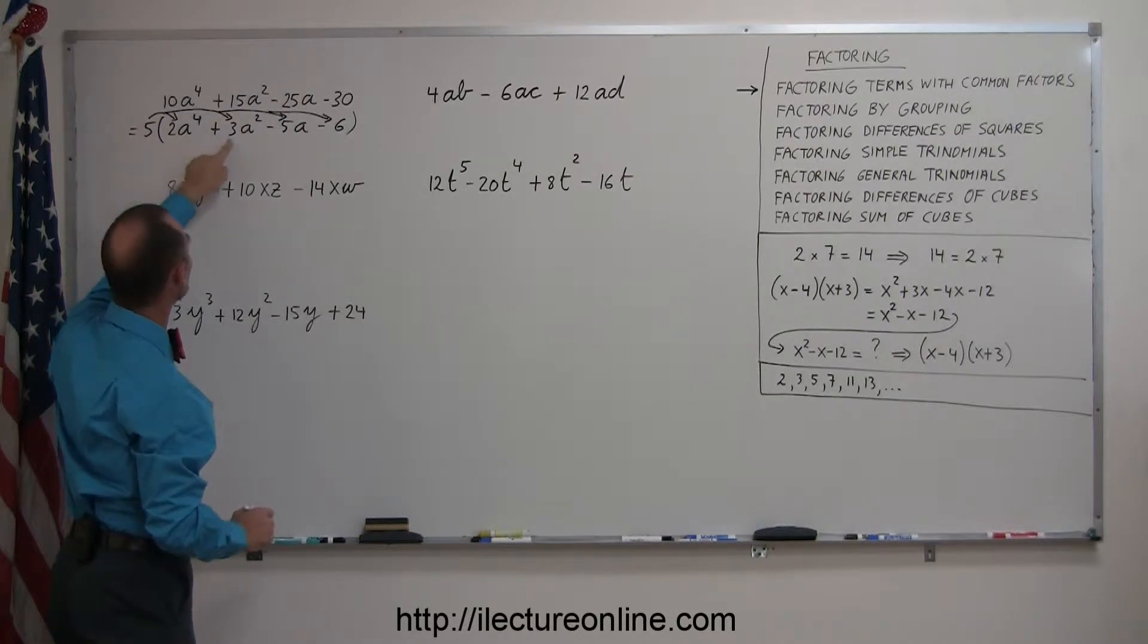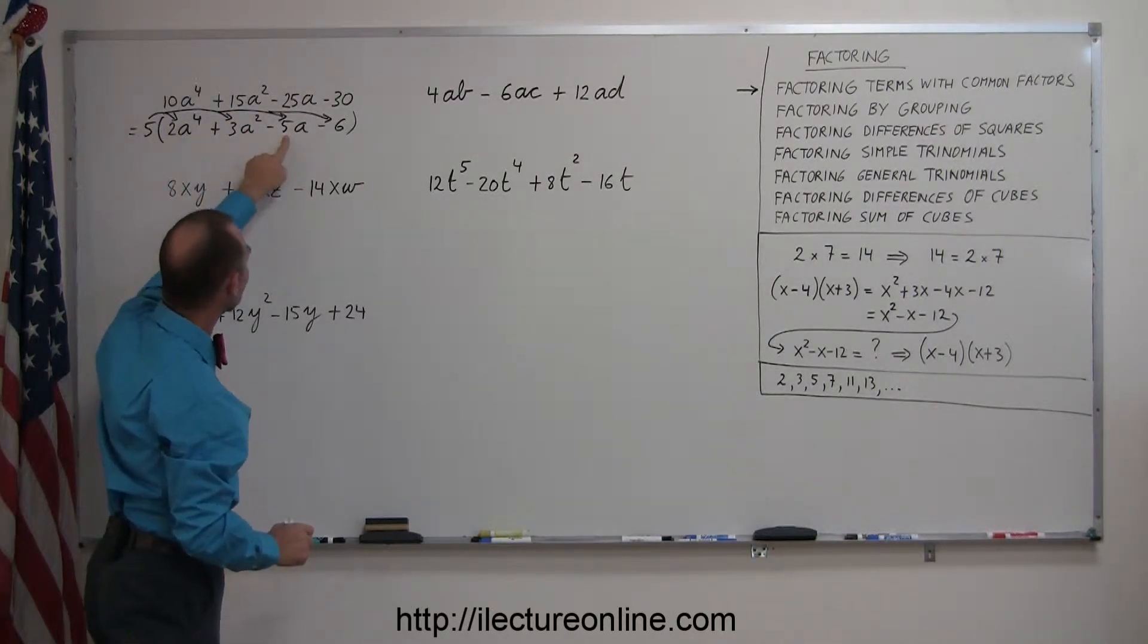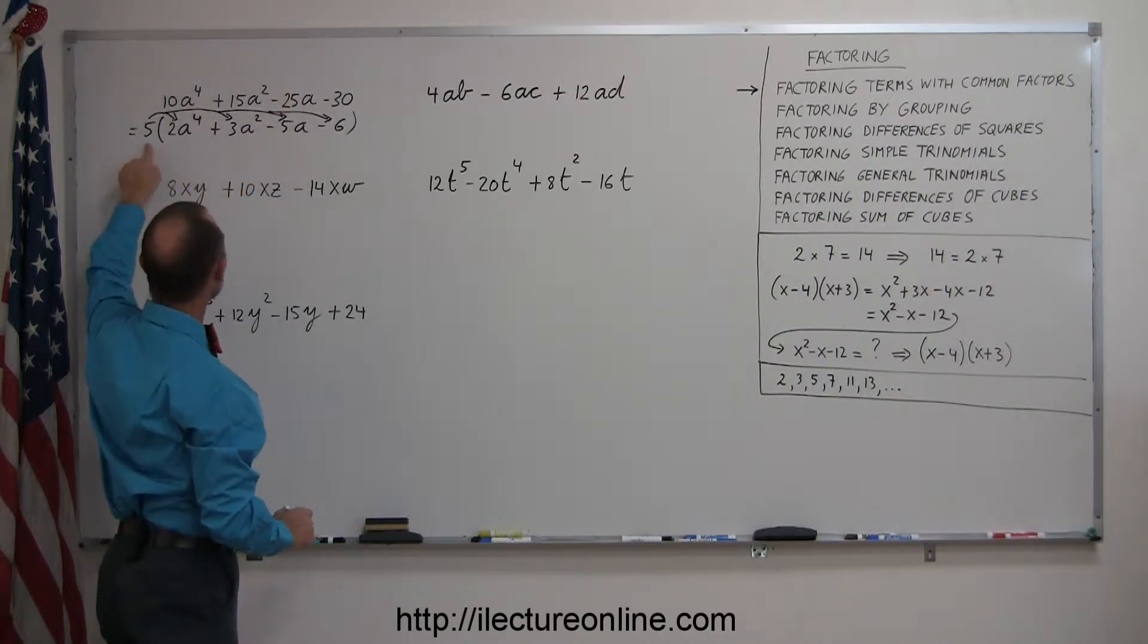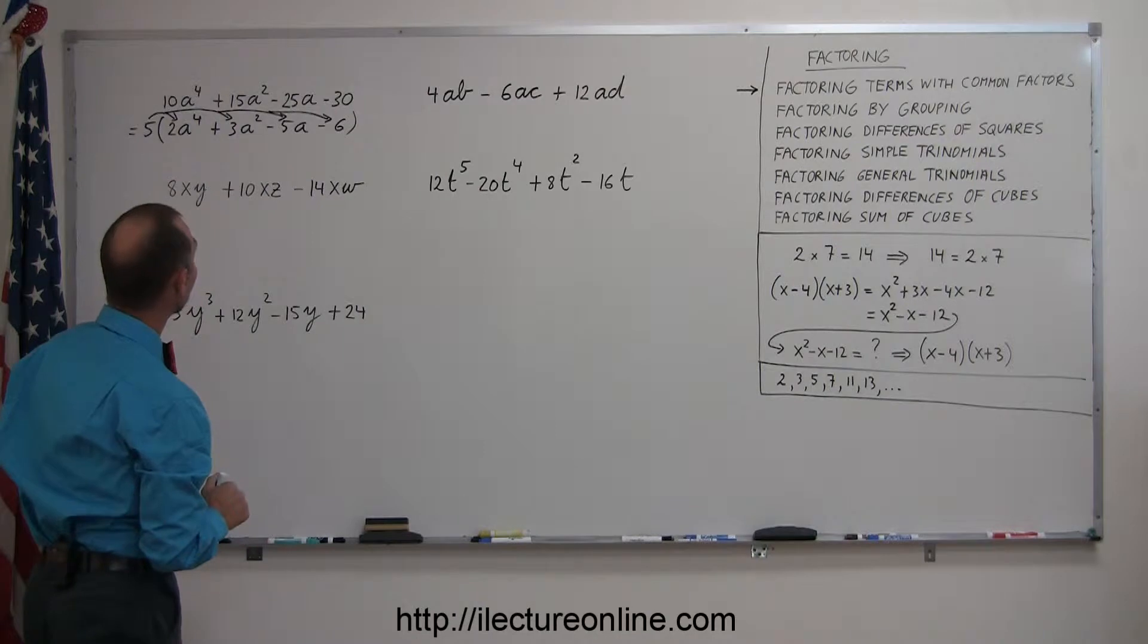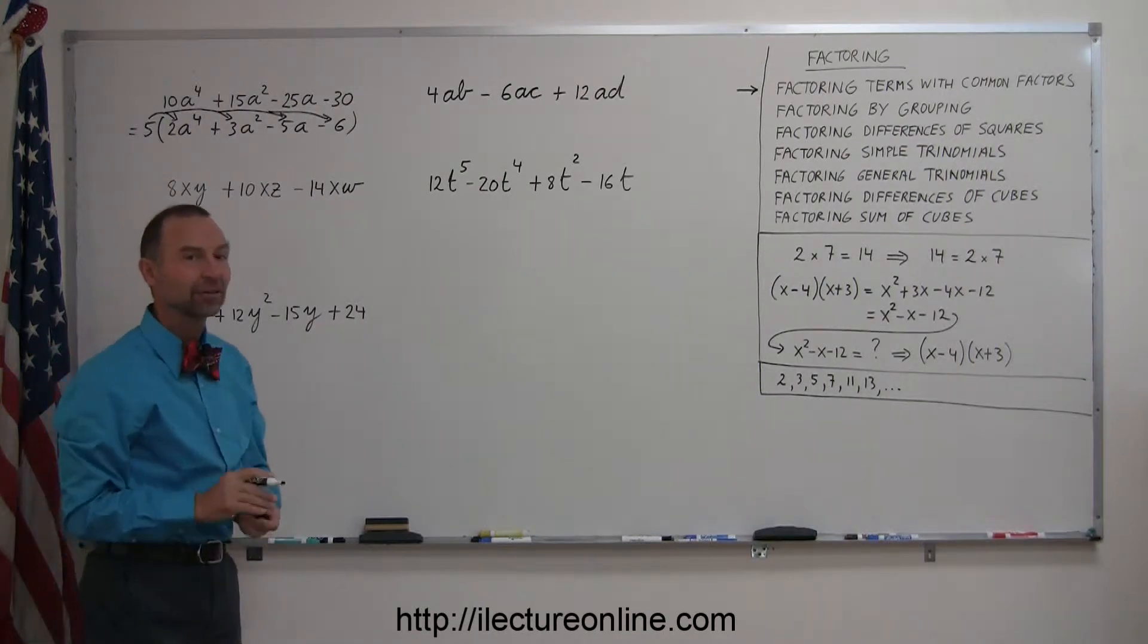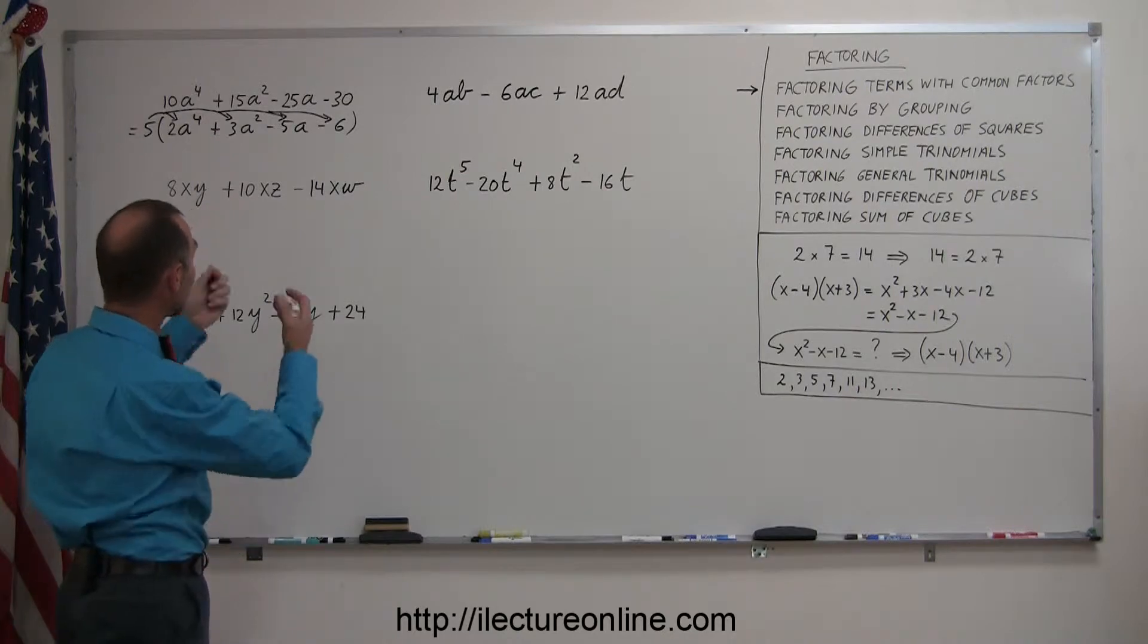If I write 5 times 3a squared, I get 15a squared, 5 times minus 5a is minus 25a, and 5 times minus 6 is minus 30. So I did it correctly, and that's how you always check to see if you factored it correctly. Always go ahead and multiply everything back together. Make sure you end up with what you started with.